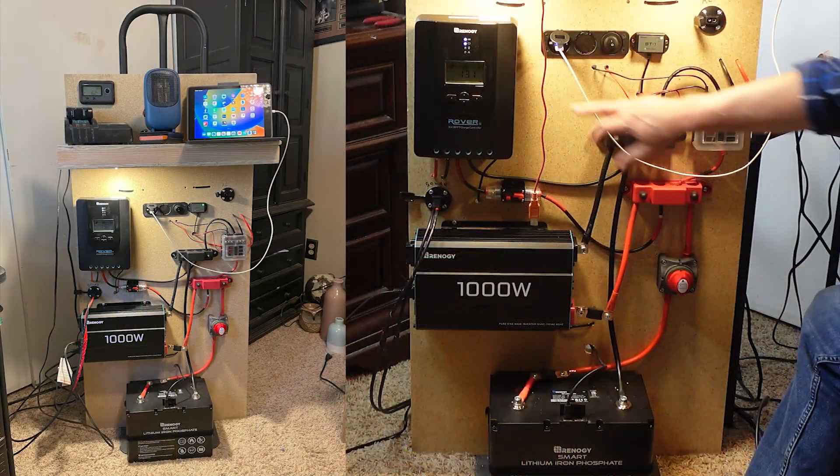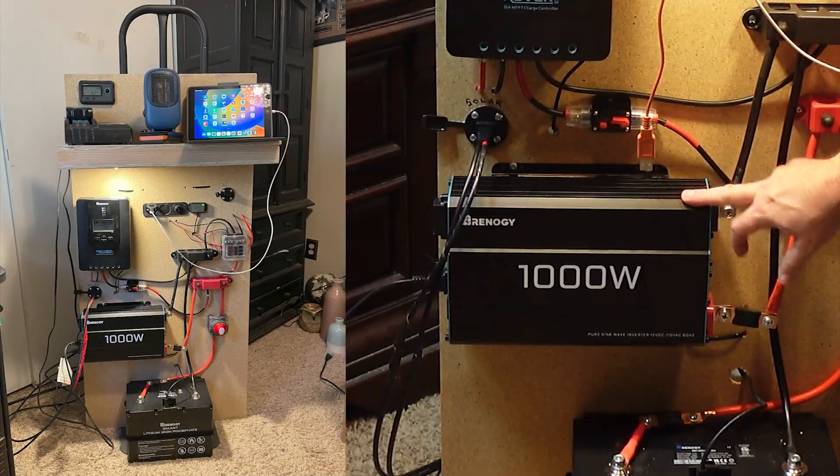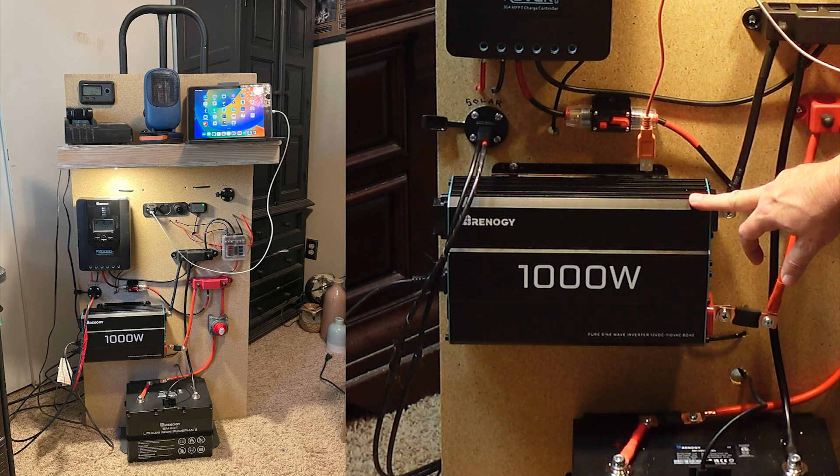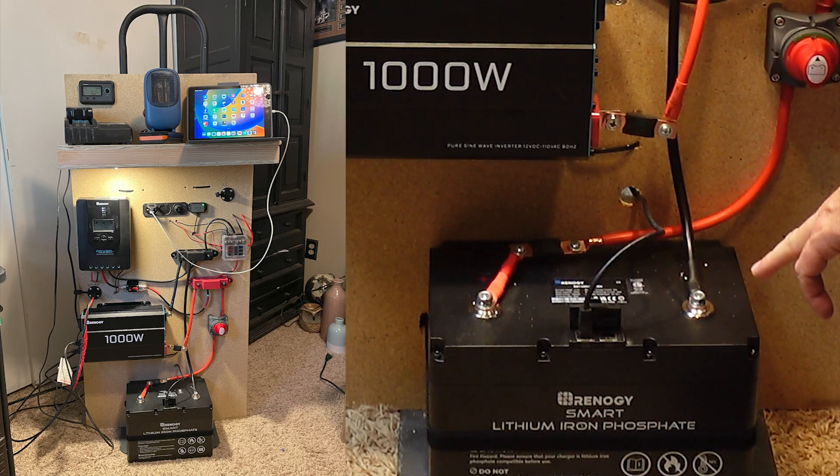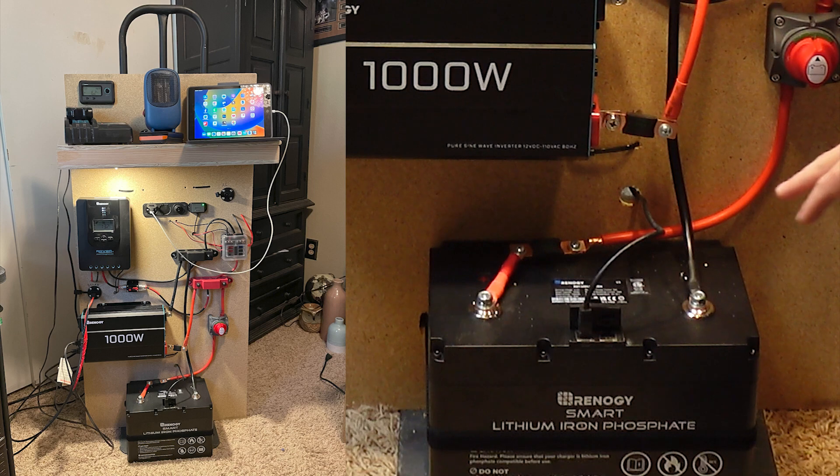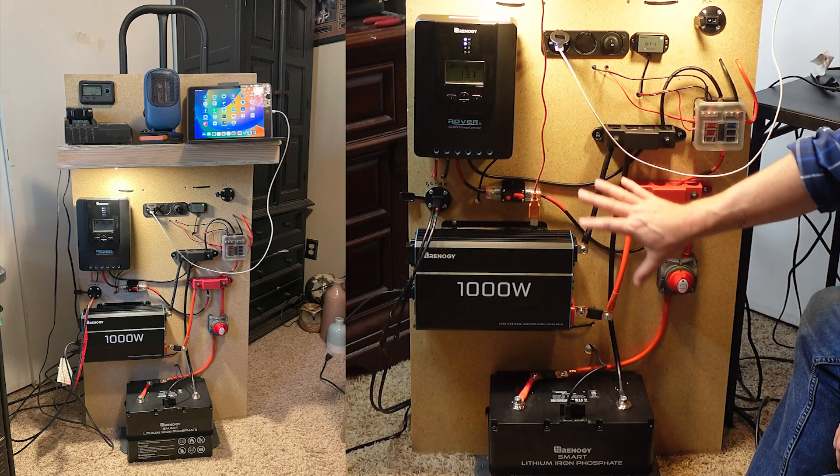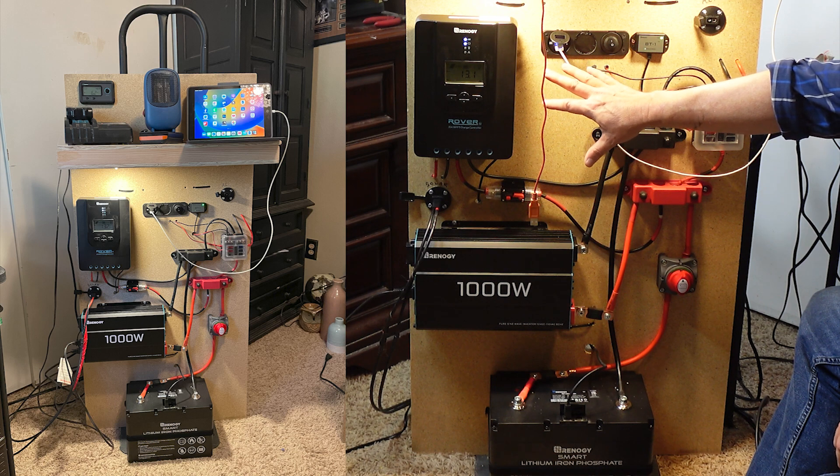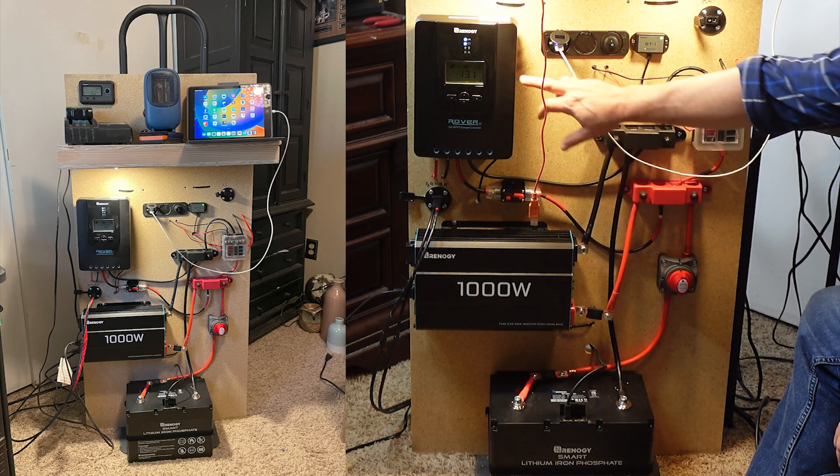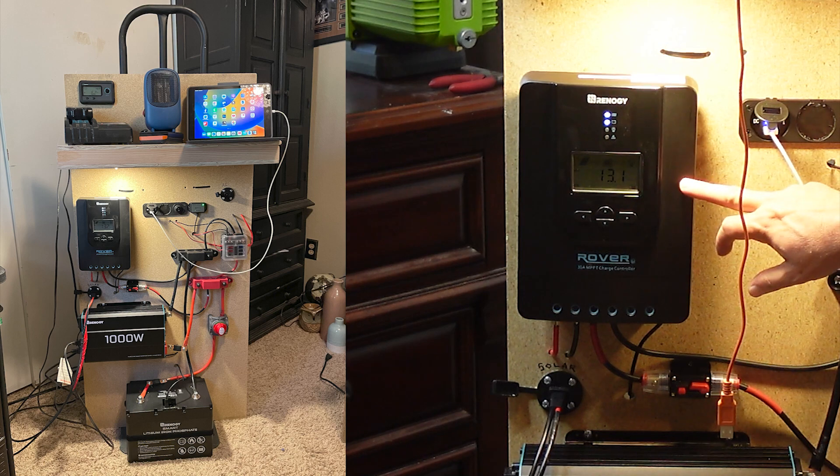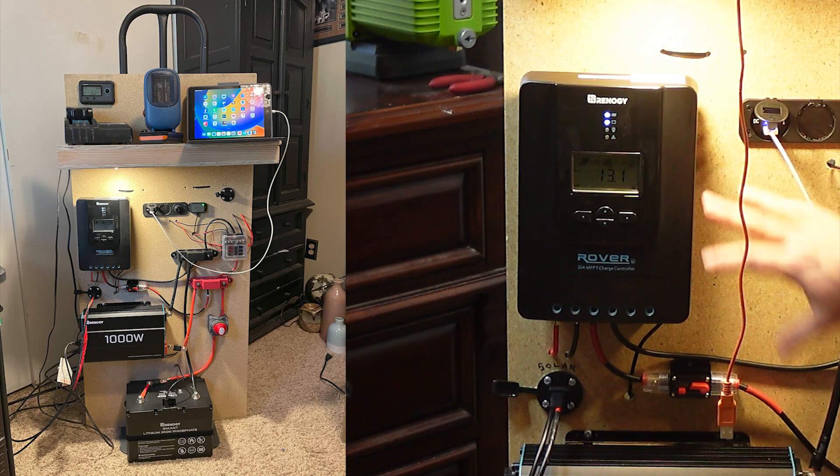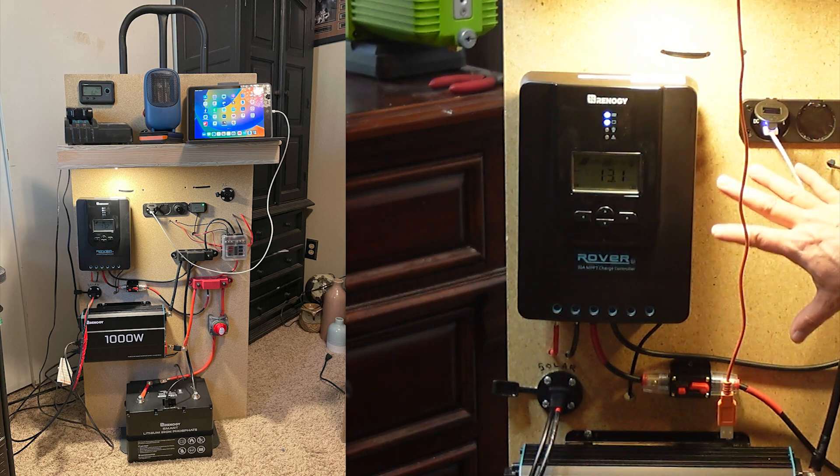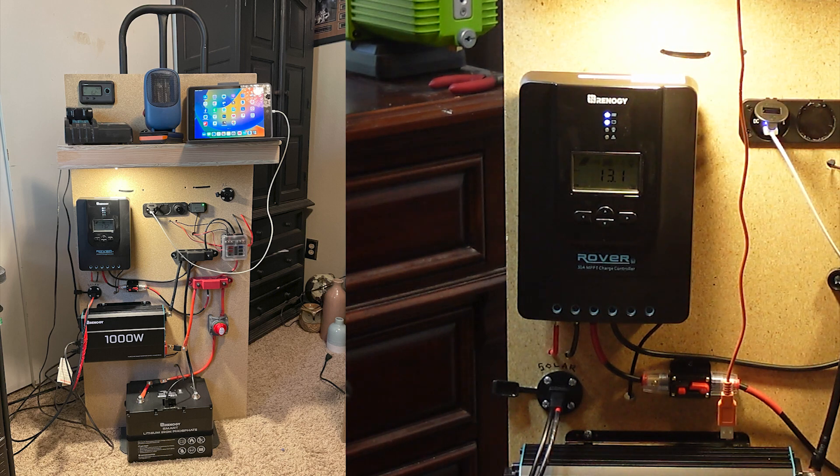Rennergy sent me this 1000 watt pure sine wave inverter. They also sent me this battery down here, which is a 100 amp hour smart battery. Both are fantastic products and I decided I would go with all Rennergy on this product. So I purchased one of the Rover 30 amp charge controllers, which is a little bit large for this, but I'll go into that later. And then I also purchased one of the 100 watt solar panels, which is again just a starting point.